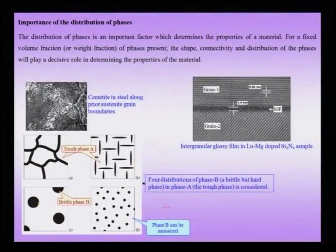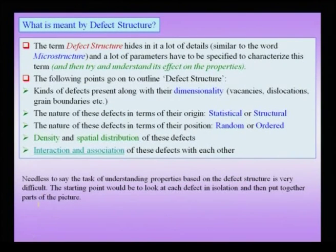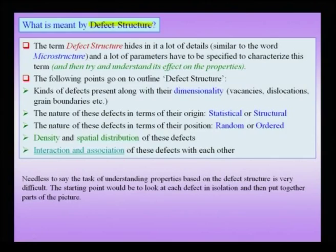In understanding the distribution of phases, we have implicitly introduced one kind of defect: the interface between phase A and phase B. To understand the properties of materials, we need to understand not only one kind of defect but what is called the entire defect structure in the material. The term 'defect structure' actually hides a lot of details — it is a very involved term wherein many parameters are required to characterize it.